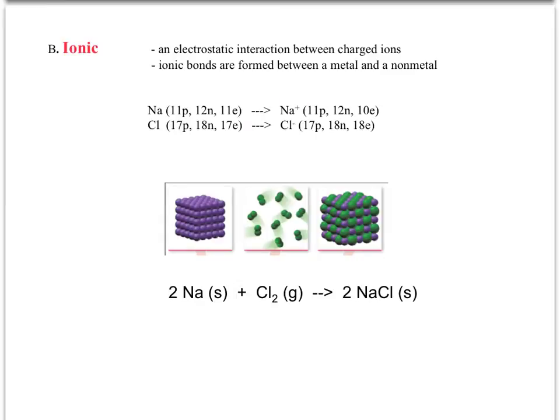Sodium tends to lose an electron to form sodium plus. Chlorine gains an electron to form chloride. During ion formation, sodium has 11 protons and, when neutral, 11 electrons. To form the sodium+ ion, one of the 11 electrons is removed, leaving 10. You'd complete this equation by writing plus an electron.